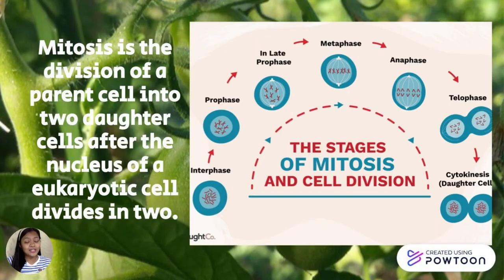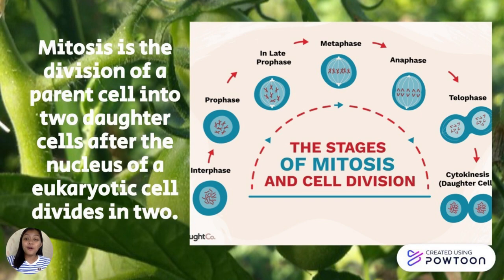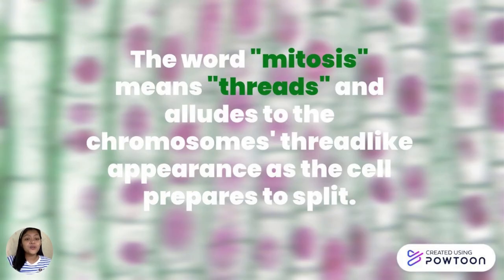What is mitosis? Mitosis is a nuclear division and produces two identical daughter cells during prophase, metaphase, anaphase, and telophase. The name mitosis means threads, and it pertains to the chromosome's thread-like appearance when the cell splits.